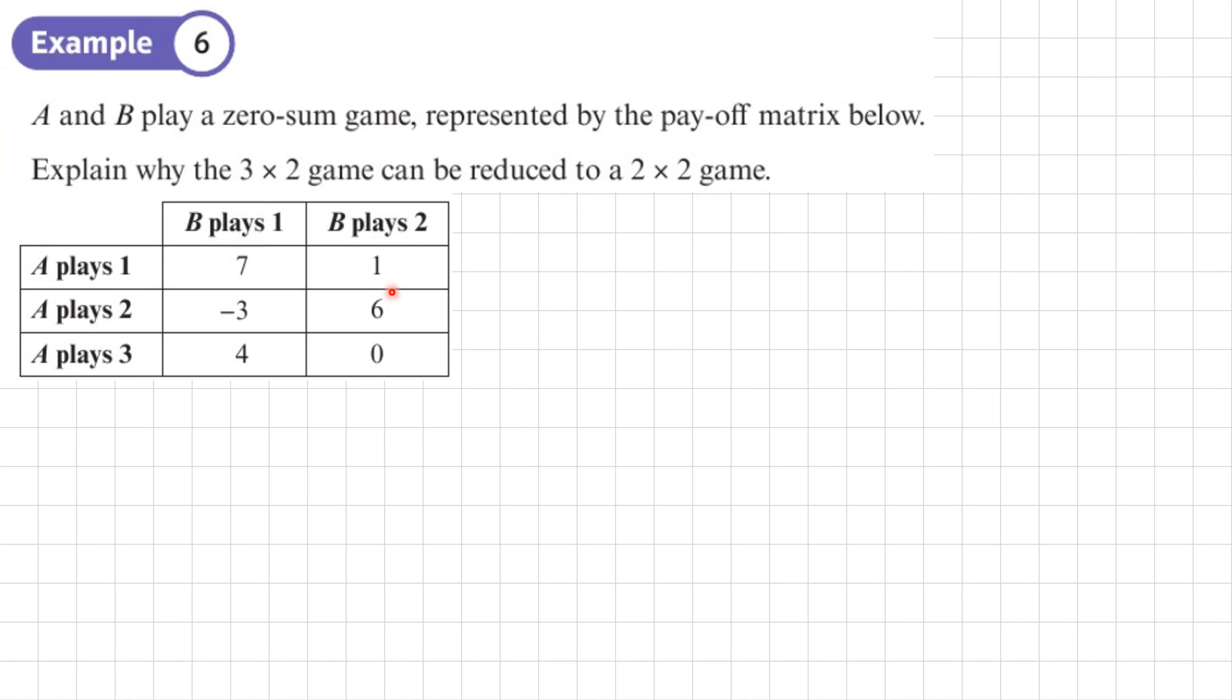So what I'm looking for is one row that dominates another. Why rows? Because I need to be reduced to a 2×2 game. And that's only going to happen if I cross out one of the rows. If I cross out one of the columns, then it's going to be a 3×1 game. And that's not what it's asking for. So I know it's going to be a row that I'm looking for. So I'm looking for one row that dominates another.